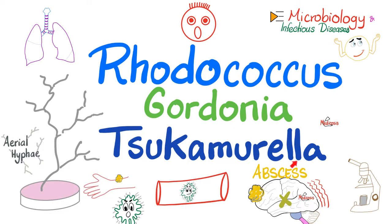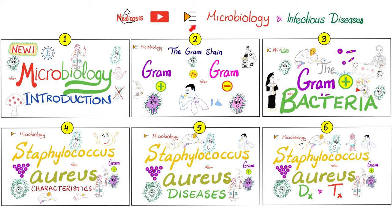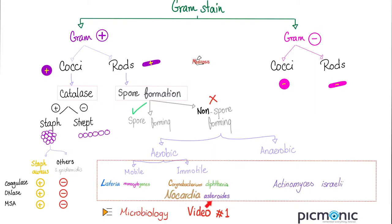Please remember this, because when we later discuss the gram-negatives, I'll tell you that in general, if a bacteria ends in 'ella,' it's probably gram-negative rather than gram-positive. Do we have exceptions? Of course we do. Tsukamurella is one such exception — it ends in 'ella,' yet is gram-positive. Please watch the videos in this playlist in order. Just like Nocardia, the three bacteria we're discussing today are gram-positive rods and non-spore-forming.